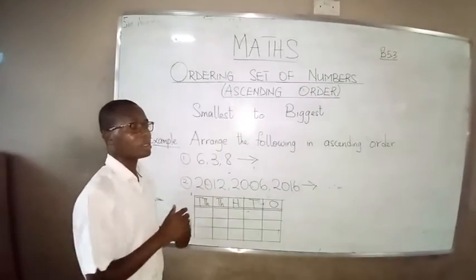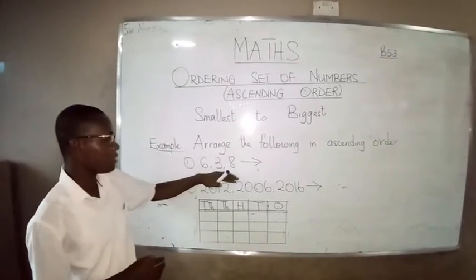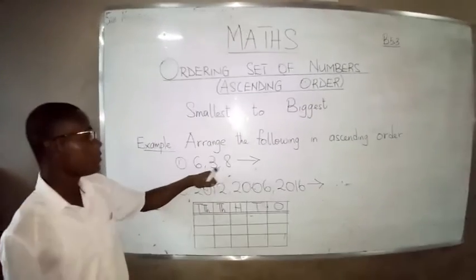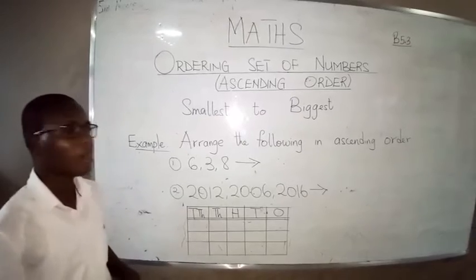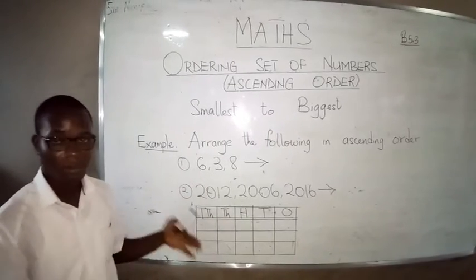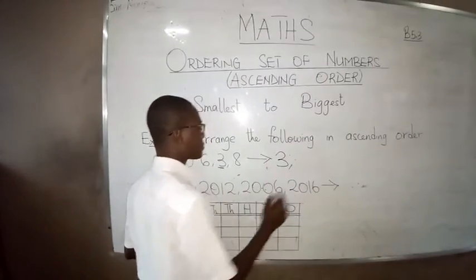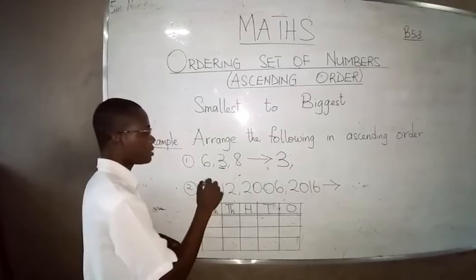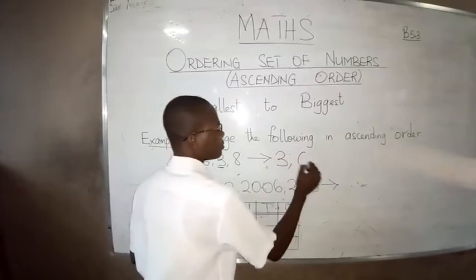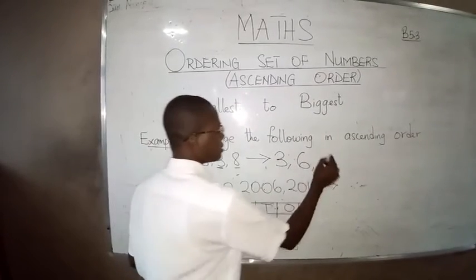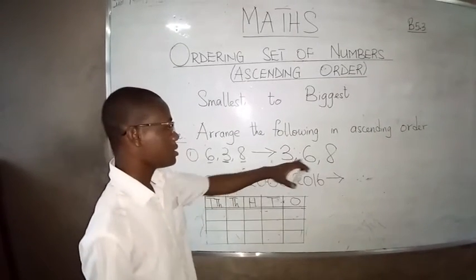So, from the smallest to the biggest. Now we have a set of numbers: six, three, and eight. Among these numbers, which one is the smallest? Three is the smallest, so write three first. The next smallest is six, and the next number left is eight. So the numbers arranged from smallest are three, six, eight.